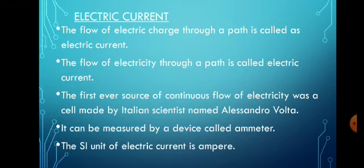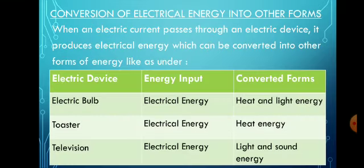The first ever source of continuous flow of electricity was a cell, which was made by an Italian scientist named Alessandro Volta. There is a device with the help of which you can measure the amount of electric current flowing through a path, and that device is called an ammeter. The SI unit for measuring electric current is ampere.